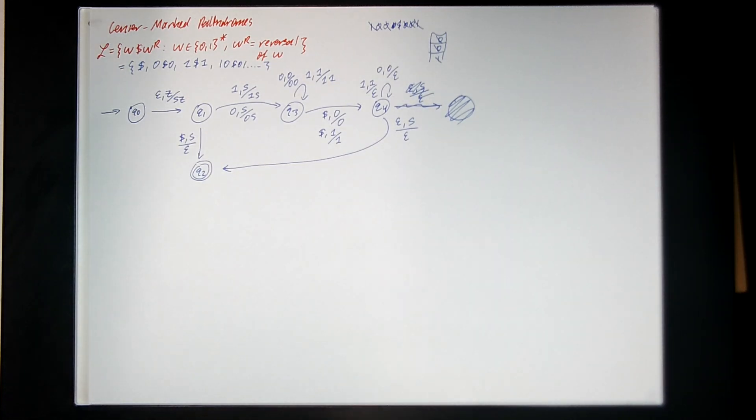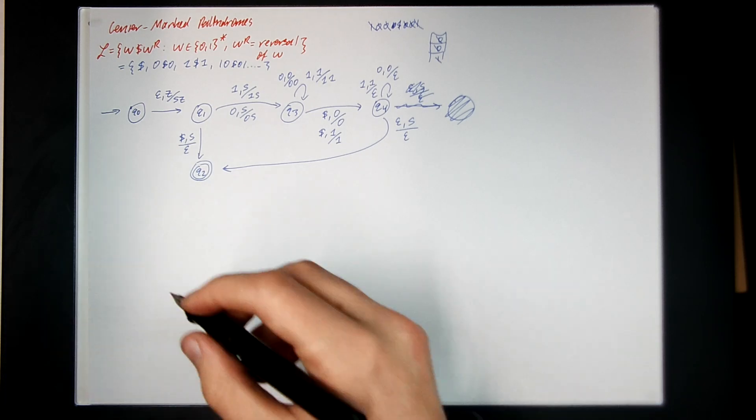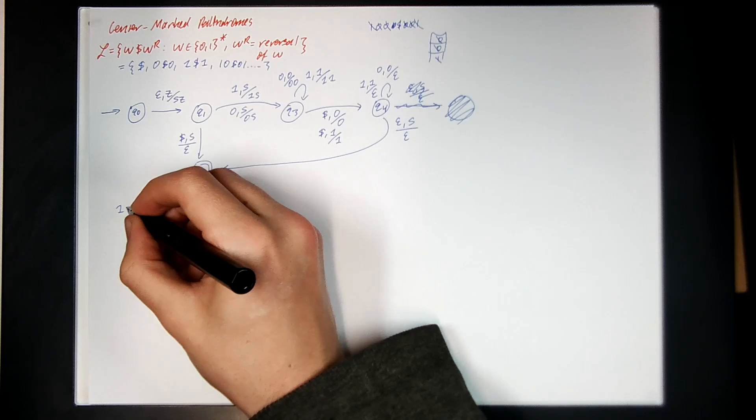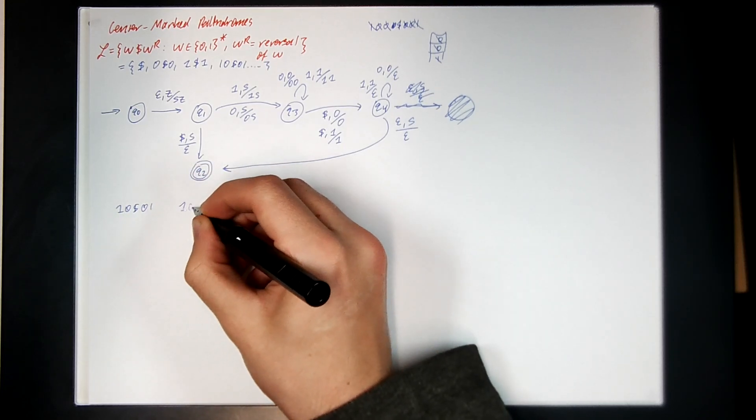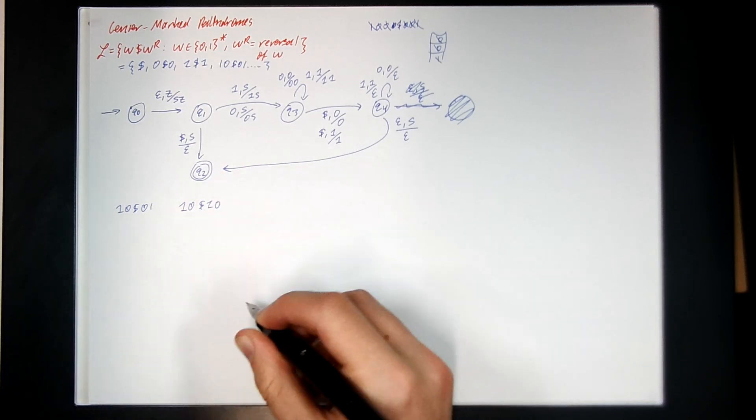Let's do a trace of this and we'll do a trace for an accepting string and a trace for a rejecting string. So, what's an accepting string? One, zero, dollar, zero, one. What's a rejecting string? One, zero, dollar, one, zero. So, let's try this one first.